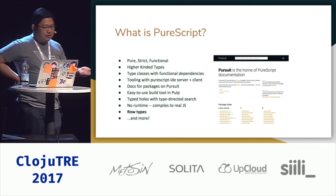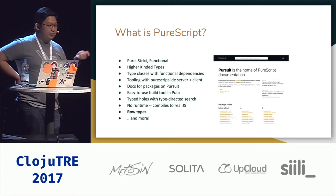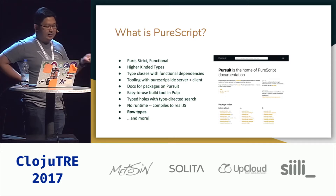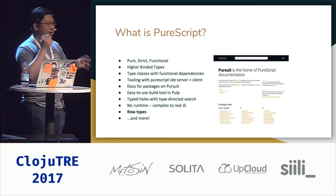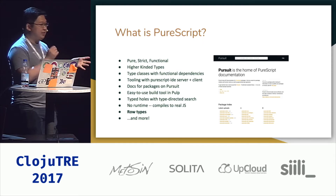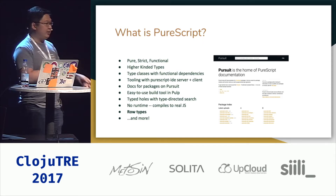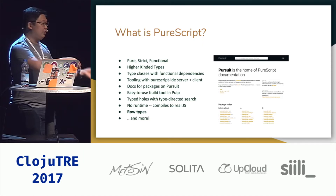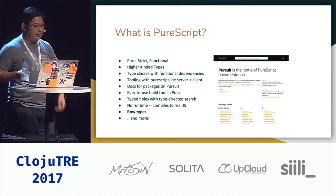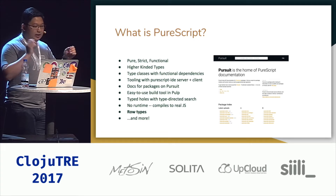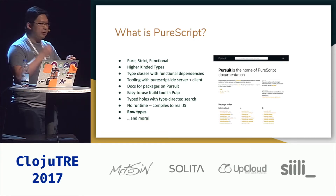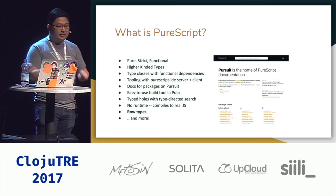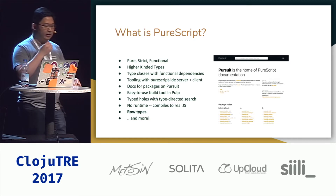PureScript is a pure functional language that's strictly evaluated and has hierarchical types. So instead of writing math functions specifically for lists, you have instances of functor for the list. It has type classes with functional dependencies, so you can determine how instances get resolved.